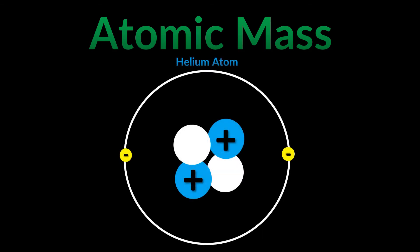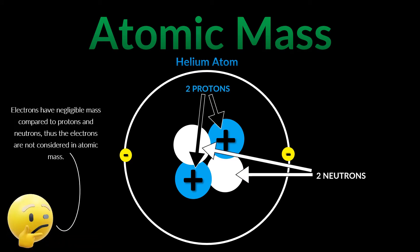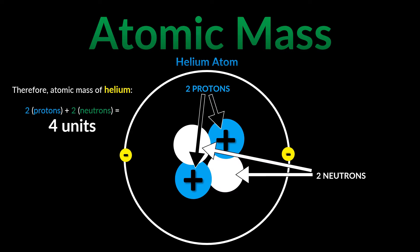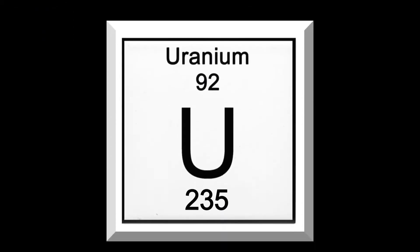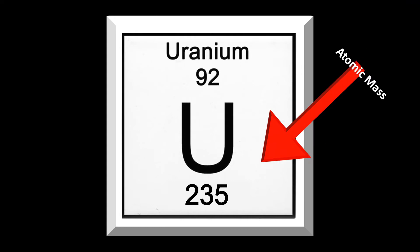To understand nuclear fission, you need to have an idea of what atomic mass is. If you don't, it is basically the number of protons plus the number of neutrons in an atom. For understanding this concept here, let's take the example of Uranium, Uranium-235 to be specific.